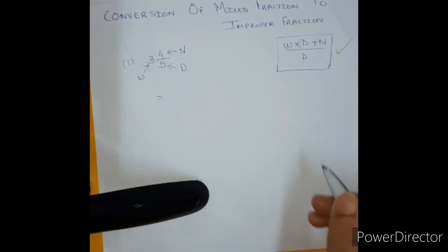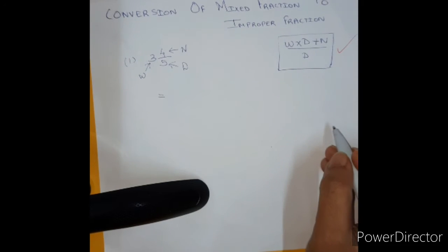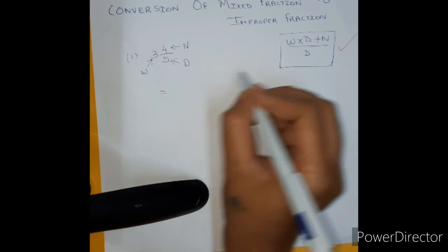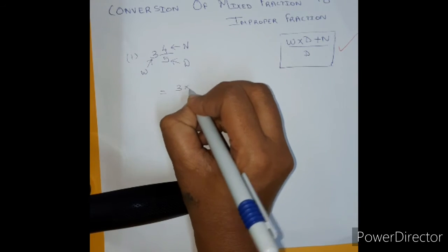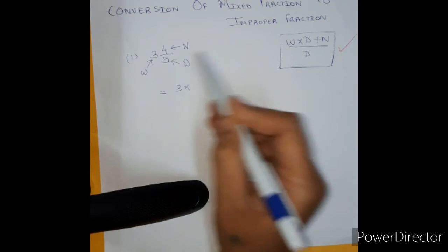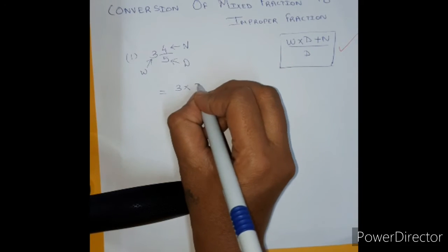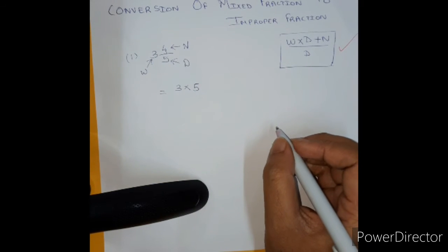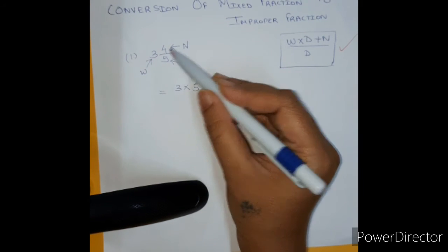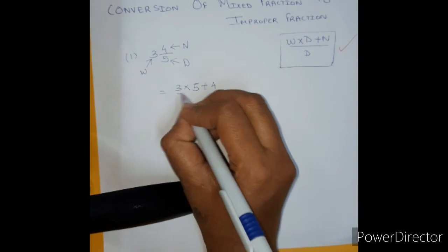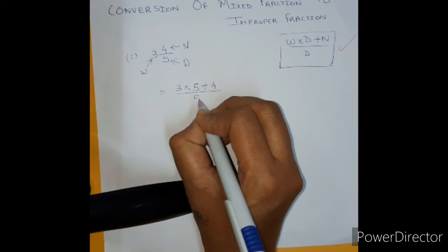So we will write here the numerator is equal to, whole number part is 3 which is multiplied with the D, denominator. Denominator over here is 5 plus N, plus N is numerator which is 4 upon D which is 5.